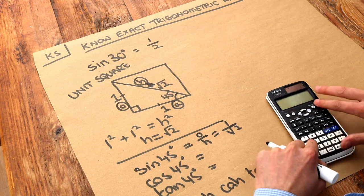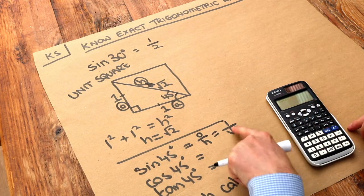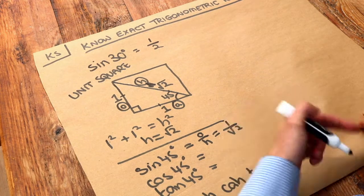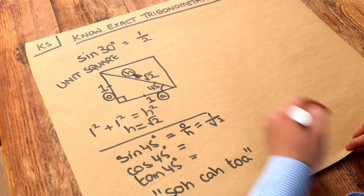If you put sine of 45 in your calculator, it will actually say root 2 over 2, which is the same as this. They rationalize the denominator of that. If you don't know what's meant by rationalizing the denominator, I have a separate video on that, but don't worry about that for now.